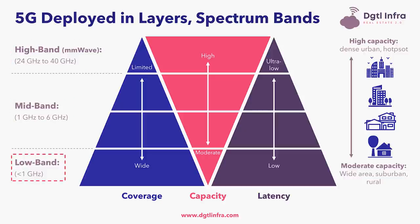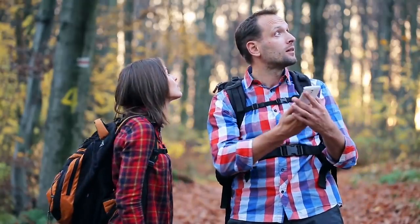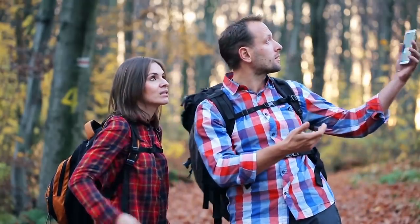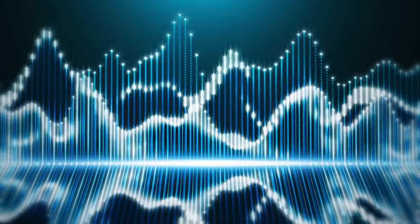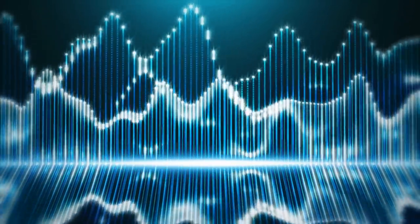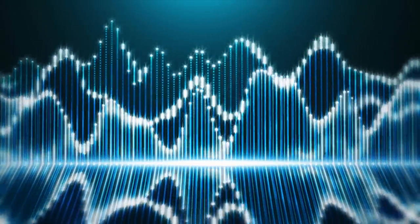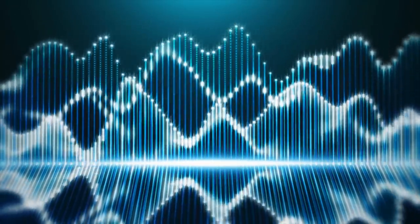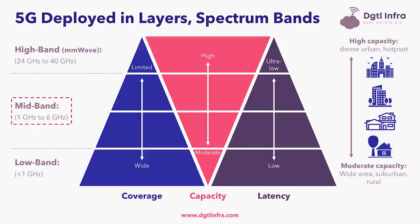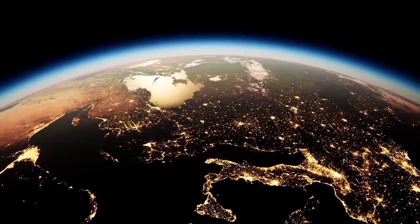Low band is typically the first layer of coverage, as it provides much better coverage compared to mid and high band frequencies. Low band is comprised of 4G frequencies that are re-farmed to be used in 5G through what is known as dynamic spectrum sharing. In the middle are mid band frequencies, which are sub-6 GHz and include frequencies like 3.5 GHz, a global standard.